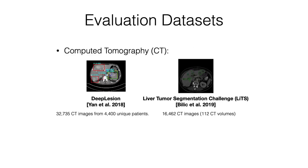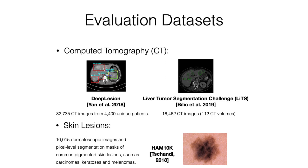We evaluate our proposed methodology on CT and dermatoscopic lesions. For CT, we consider the DeepLesion dataset for which the ground-truth pixel-level segmentations are not available. Therefore, we use the GrabCut-based segmentations as the ground truth. We also evaluate on the LiTS dataset. While bounding boxes are more commonly used for CT datasets, we use skin lesions as an additional test case due to the wider availability of publicly accessible datasets and segmentations.